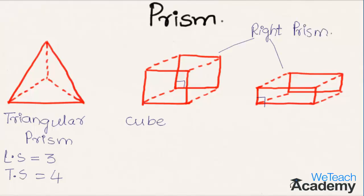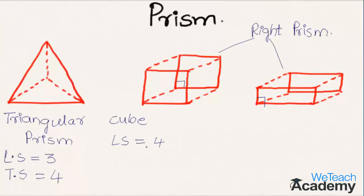Coming to the cube: lateral surfaces equal four, since the number of sides of the base is four. Total surfaces include four lateral surfaces plus top and bottom — that is four plus two — giving six total surfaces for the cube.